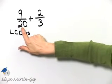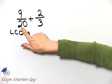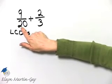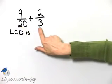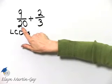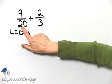Three does not divide into twenty, so let's look at multiples of twenty. Twenty times two is forty, but three does not divide into forty. Twenty times three is sixty.